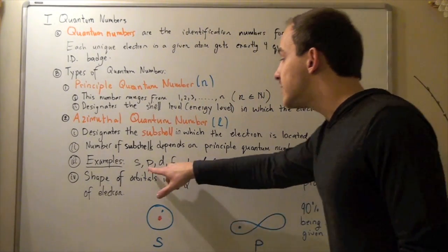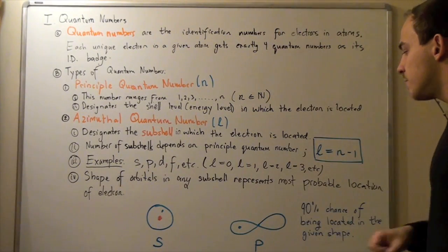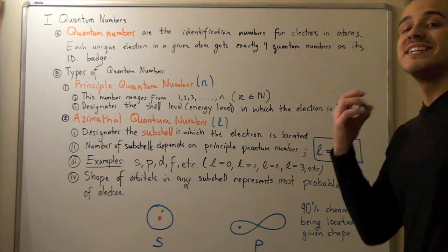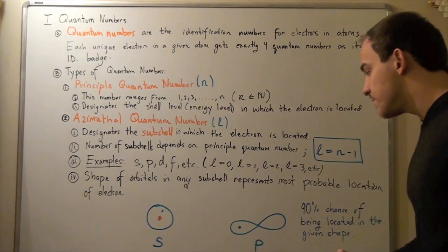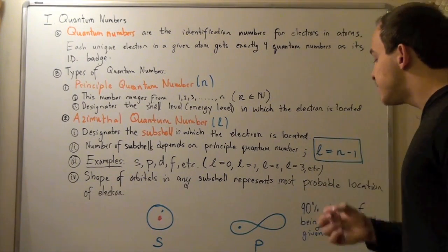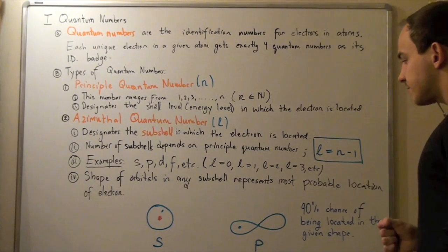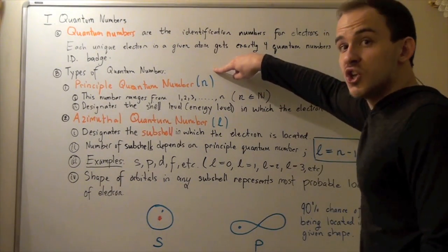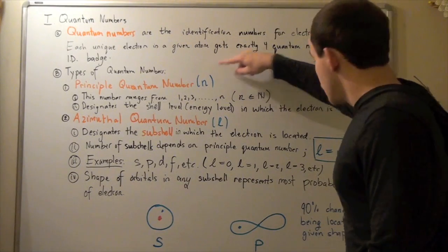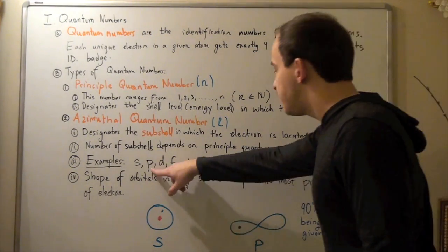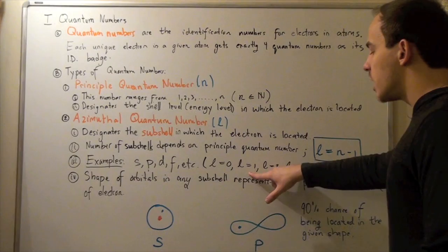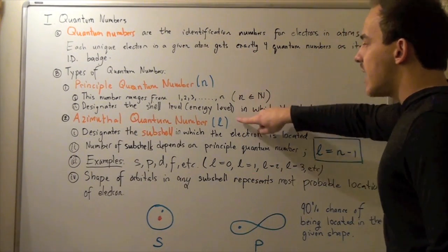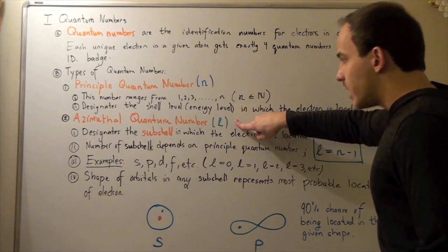The P orbital has a different shape — there is a 90% probability that the electron is found within this dumbbell-like shape. For the P orbital, N must equal 2, because if N equals 2, then L equals 1, and P has a subshell value of L equals 1. So this corresponds to N equals 2 and L equals 1.